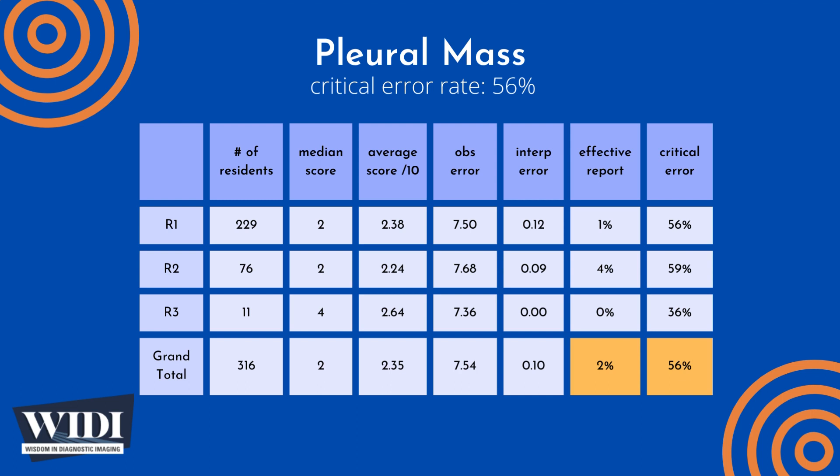We define a report having a critical error to be one with scores between 0 and 2. In terms of letter grades, this would be an F or a D. In this most missed case, 56% of residents produced reports with critical errors.